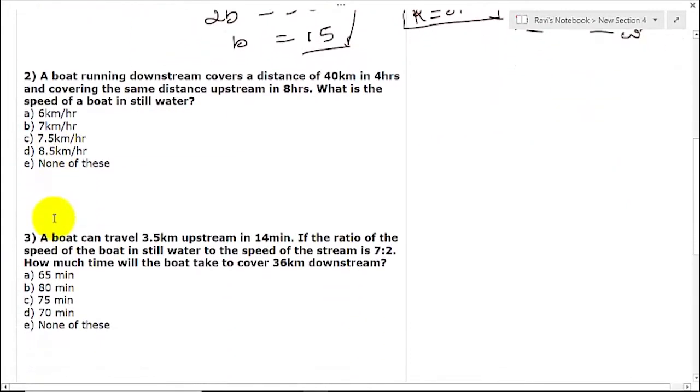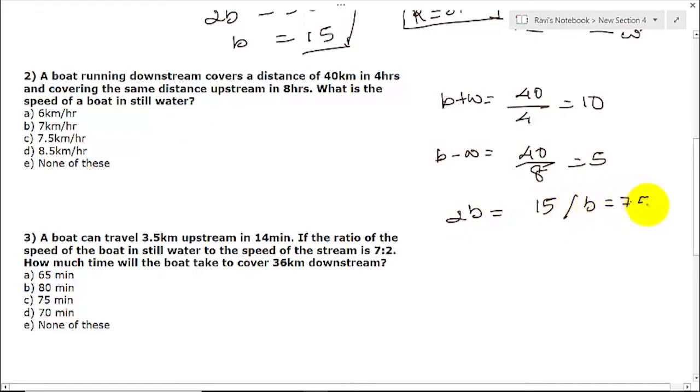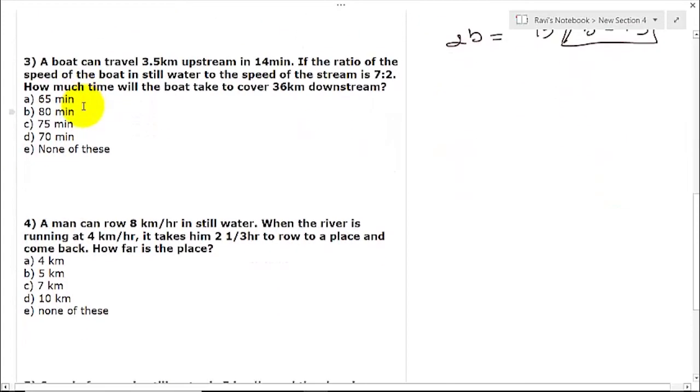Let us go to question number two. A boat running downstream covers a distance of 40 km in 4 hours. Downstream, boat plus water: distance by time is 40 by 4, that is 10. And covering the same distance upstream, b minus w: distance is same, time is 8, that is 5. So what is the speed of boat? Boat will be the sum of these two divided by 2: that is 15, so b will be 7.5.